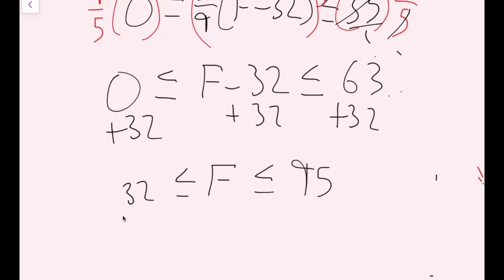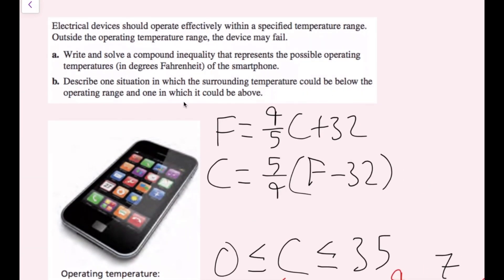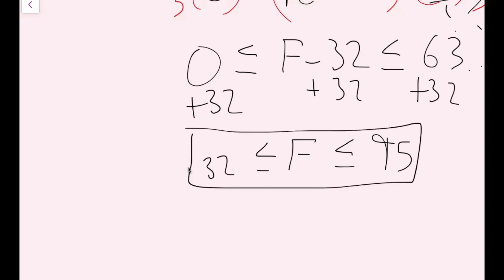So the operating temperature range in degrees Fahrenheit is 32 ≤ F ≤ 95. For part B, a situation where the device is below 32°F could be leaving it outside in the cold. A situation where it's above 95°F could be leaving your phone in a car on a hot day. Those are the compound inequality and the real-life situations.